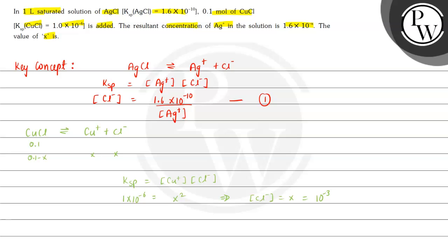So what we will do here? We will substitute this value in equation 1. That is, Ag+ concentration will be equal to 1.6 × 10^-10 divided by 10^-3. This will be equal to 1.6 × 10^-7. As we can see in the question, what was the concentration of Ag+? 1.6 × 10^-x.